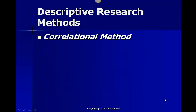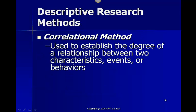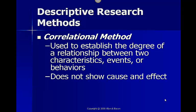The correlational method is used to establish the degree of relationship between two characteristics, events, or behaviors. The correlational method cannot show us cause and effect. It simply tells us that there's a relationship between two things.